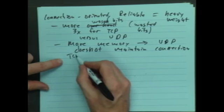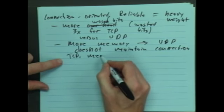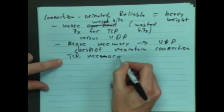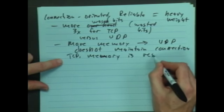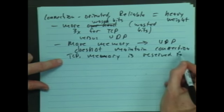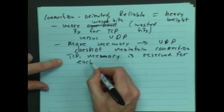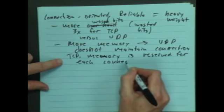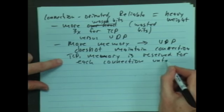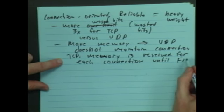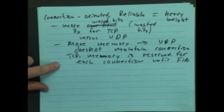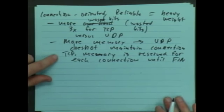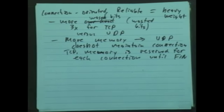For TCP, the memory is reserved for each connection until the end, so until we do a FIN. And that causes problems. When we get to security, we'll talk about how that ends up being a way to do a denial-of-service attack, but that's a really sad kind of thing.